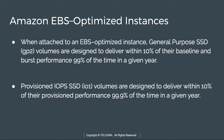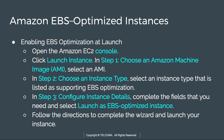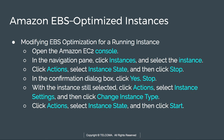Both throughput optimized HDD (ST1) and cold HDD guarantee performance consistency of 90% of burst throughput 99% of the time in a given year — meaning these optimized instances deliver 99% performance across a complete year. To use EBS optimized instances: open the console, launch an instance, choose an AMI, select the instance type, configure it, and then launch.